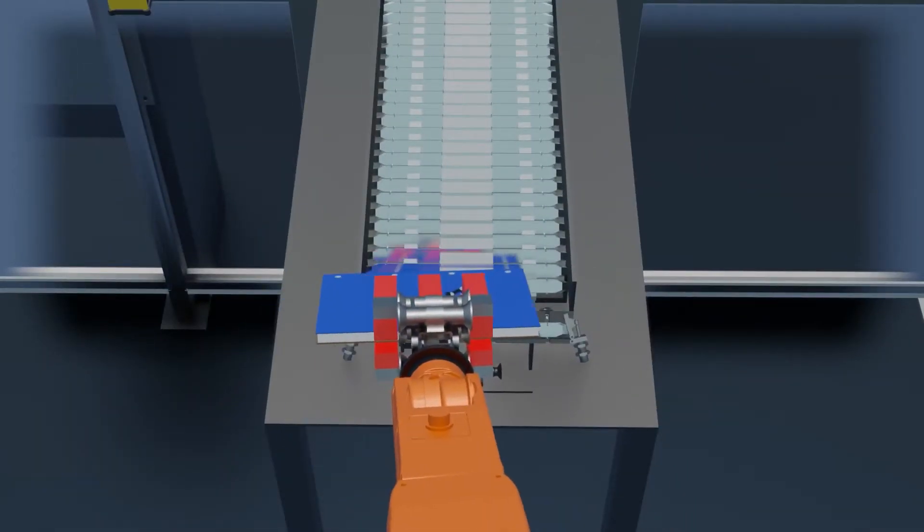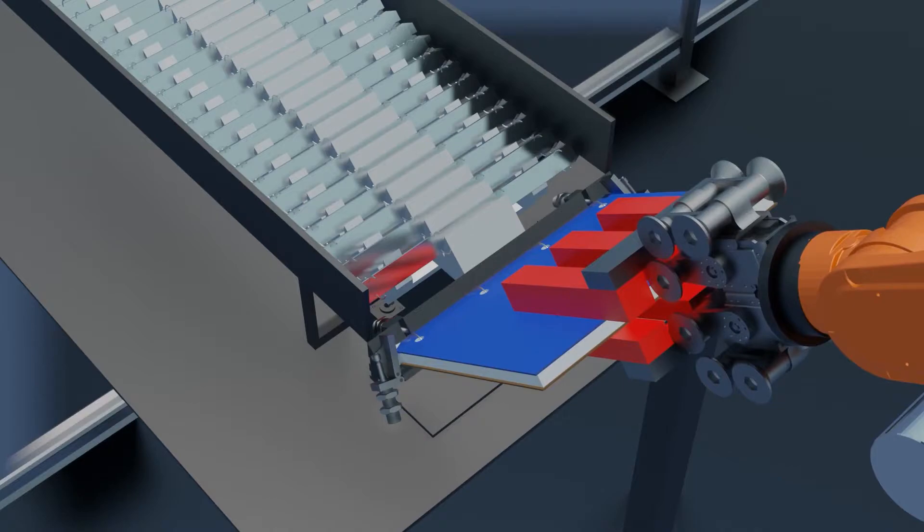Once the clip is secured, the Cognex robot passes the notebook on to the next station.